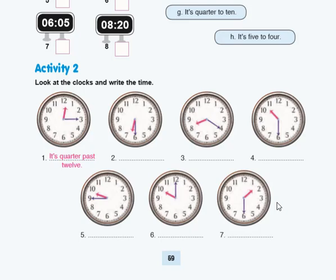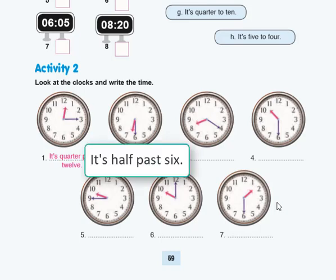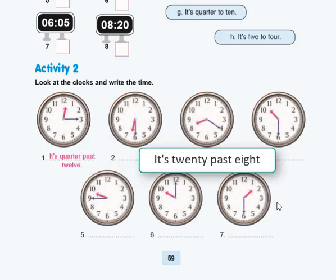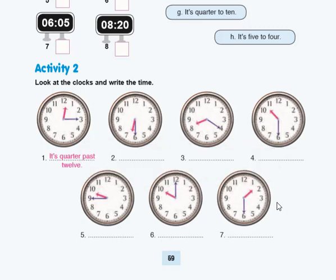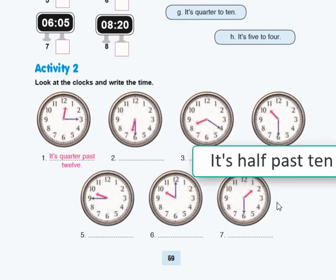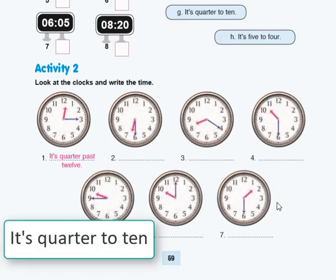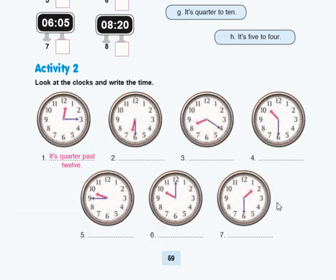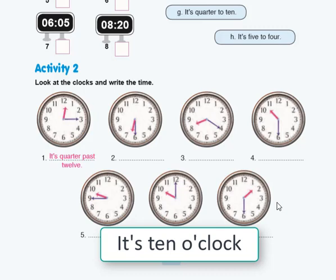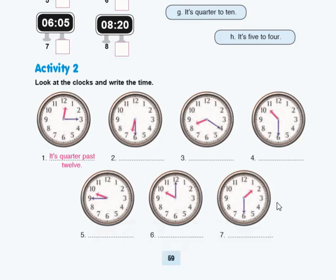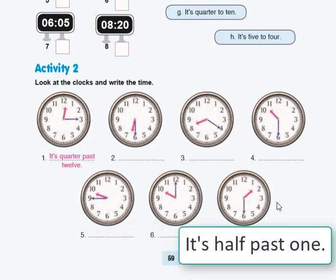Number two, it's half past six. Number three, it's twenty past eight. Number four, it's half past ten. Number five, it's quarter to ten. Number six, it's ten o'clock. Number seven, half past one.